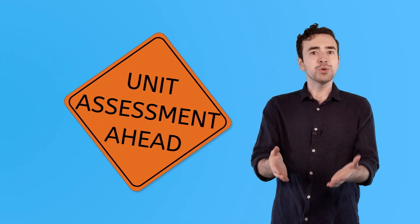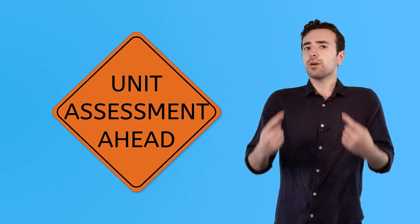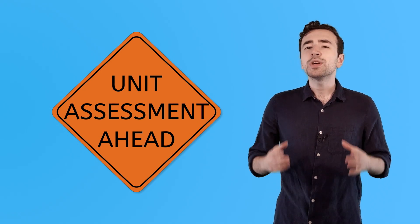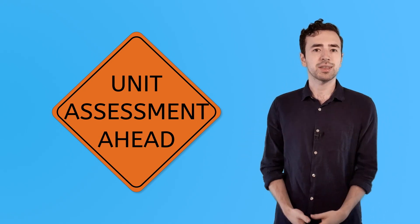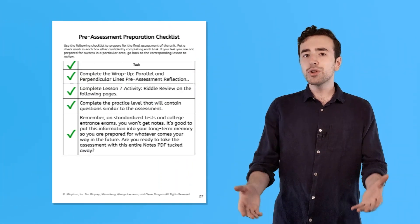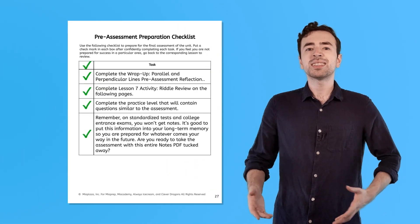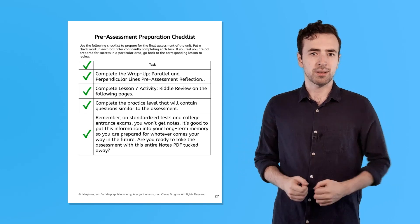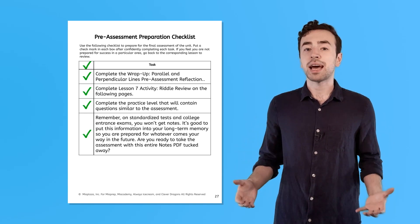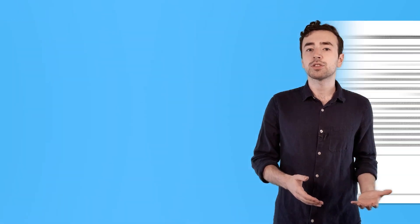Now that you've completed the entirety of the parallel and perpendicular lines unit, it's almost time for your unit assessment. But before you jump into it, we need to make sure that you feel prepared and confident in your skills. In your notes template PDF, there is a pre-assessment preparedness checklist. Complete the tasks there and then show the checklist to an adult to check your work.